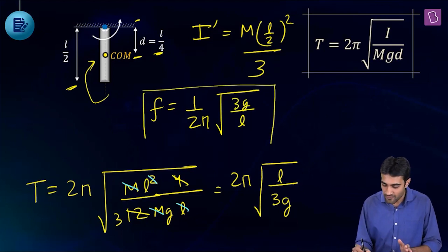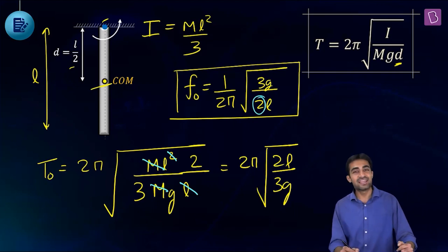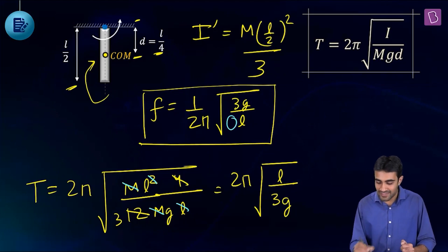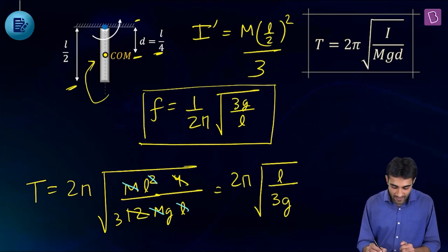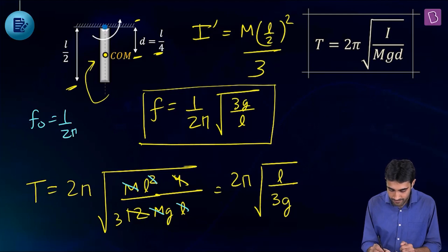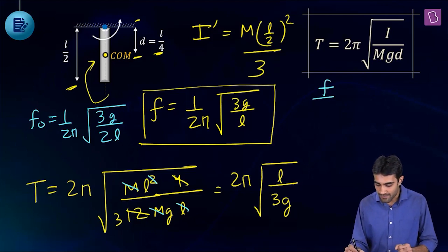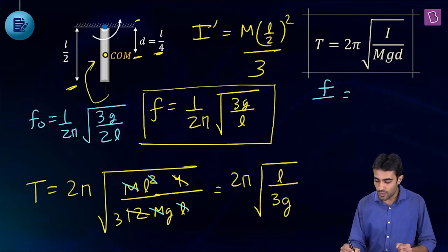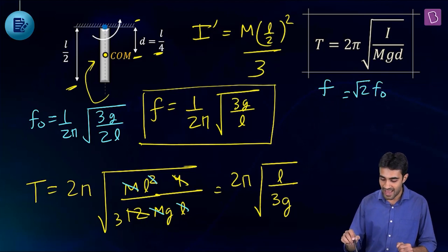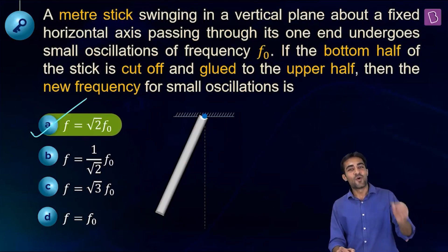Comparing: f0 = (1/2π)√(3g/2L) has a factor of 2 under the root, whereas f = (1/2π)√(3g/L) does not. So f/f0 = √2, meaning f = √2 · f0. Option A is the correct answer.